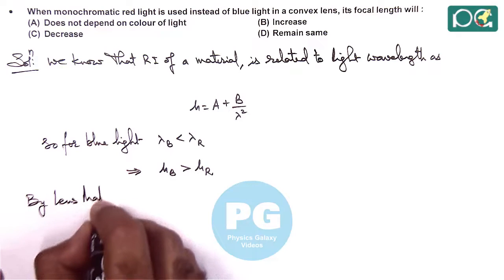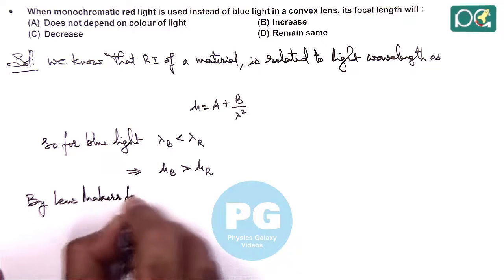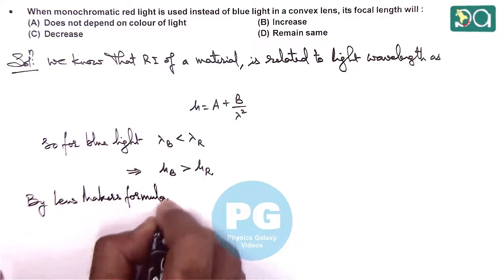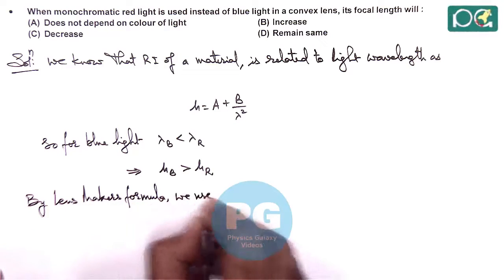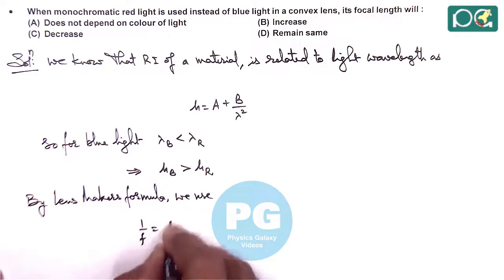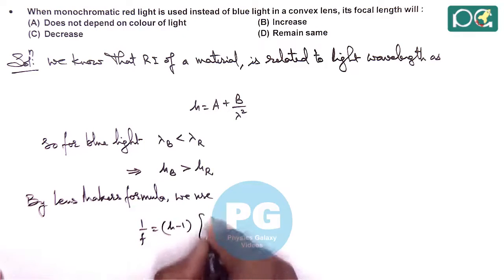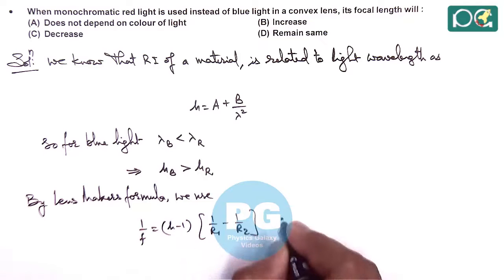Using lens makers formula: 1/f = (μ - 1)(1/R₁ - 1/R₂). This implies...